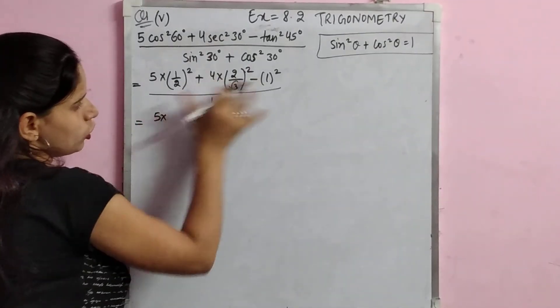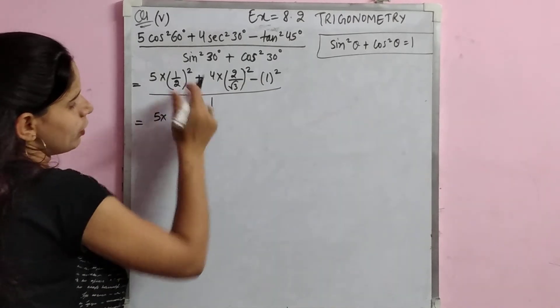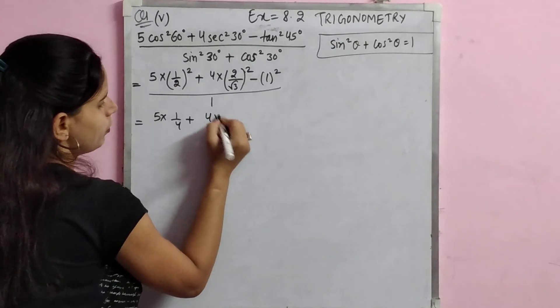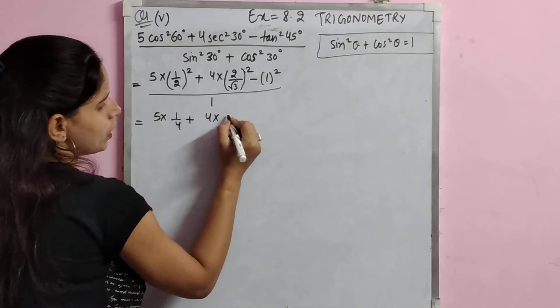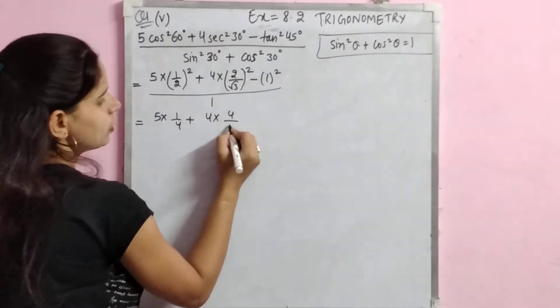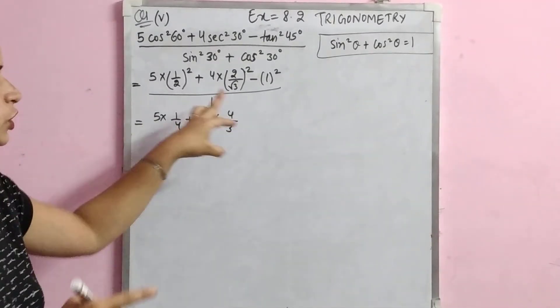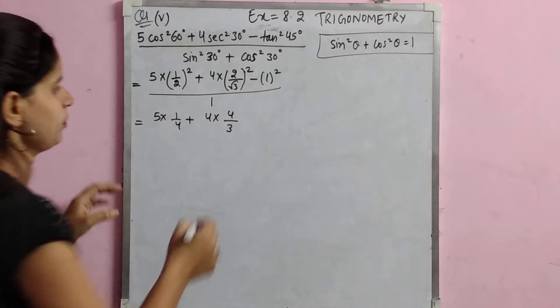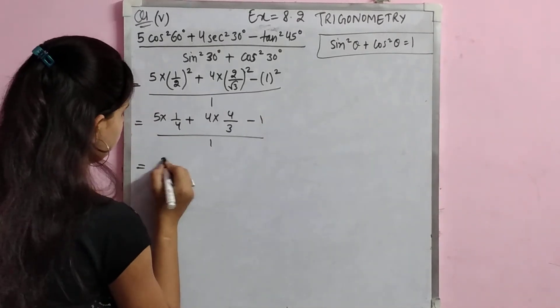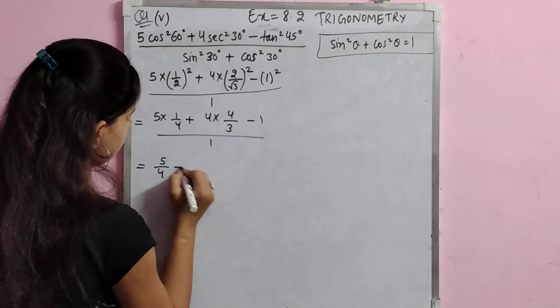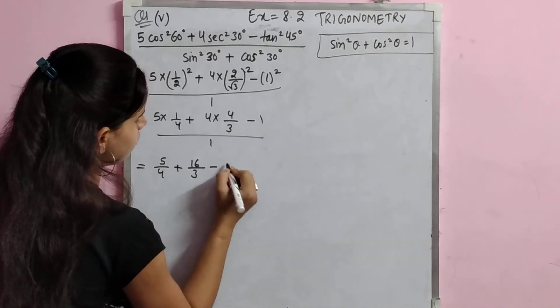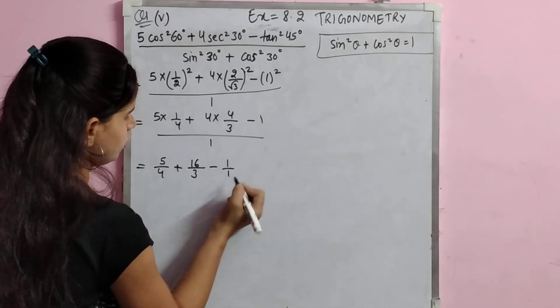Now I will solve the numerator. 5 times 1 by 2 whole squared gives 1 by 4, plus 4 multiplied by the squared value. When root 3 is squared, the root and square cancel, giving 3. Then minus 1 upon 1. So this will be 5 by 4 plus 16 by 3 minus 1.